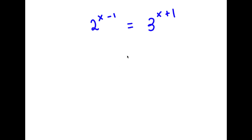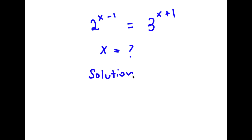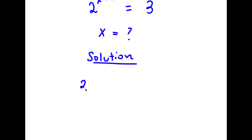In this problem, I have 2 to the power of x minus 1 is equal to 3 to the power of x plus 1. So I want to find the value of x here. For my solution, I first start with 2 to the power of x minus 1 is equal to 3 to the power of x plus 1.